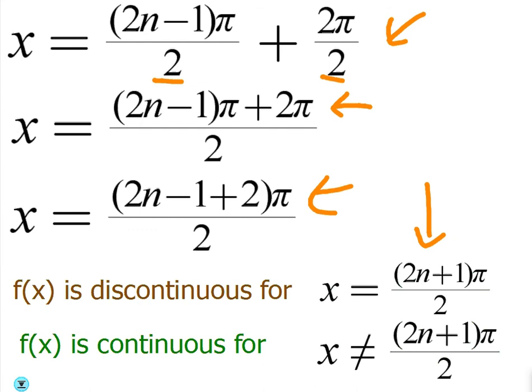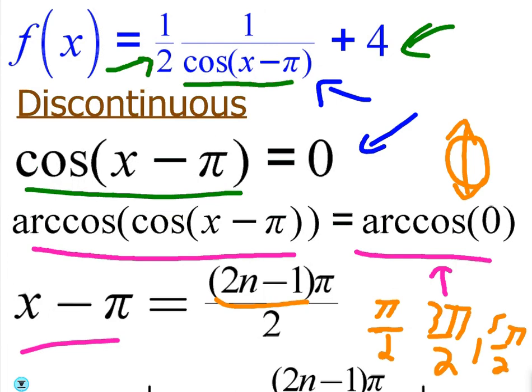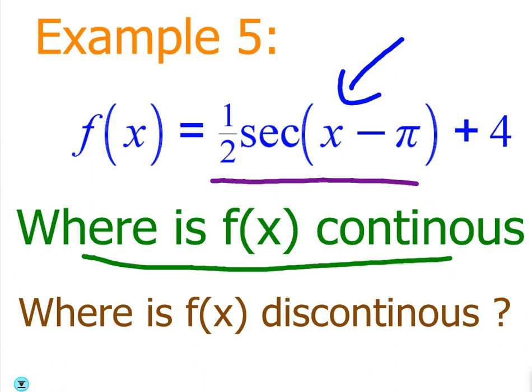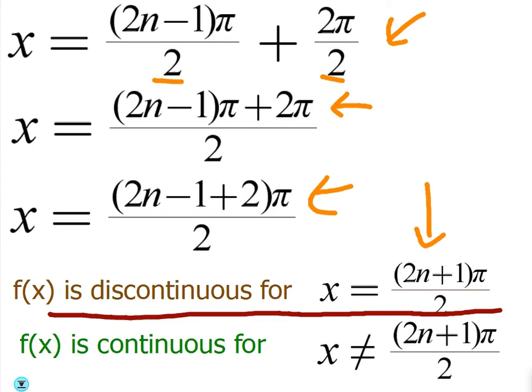The final answer for this one is it's going to be discontinuous at basically any point on the y-axis, because x is going to be 0, and therefore secant is going to be discontinuous. It's going to have an asymptote. But other than that, it would be continuous everywhere else, so we can say it's continuous when x is not equal to those values.